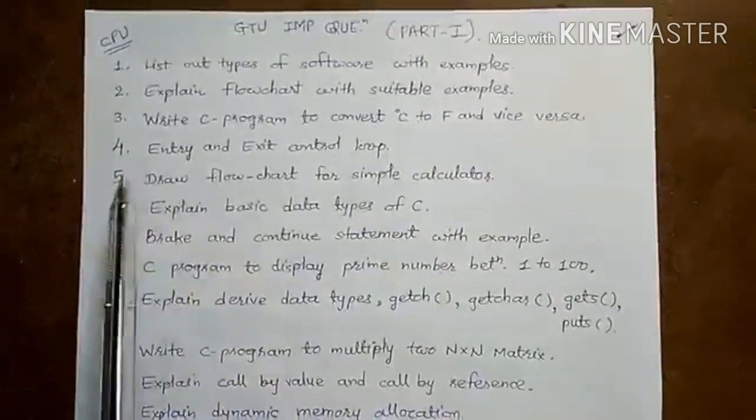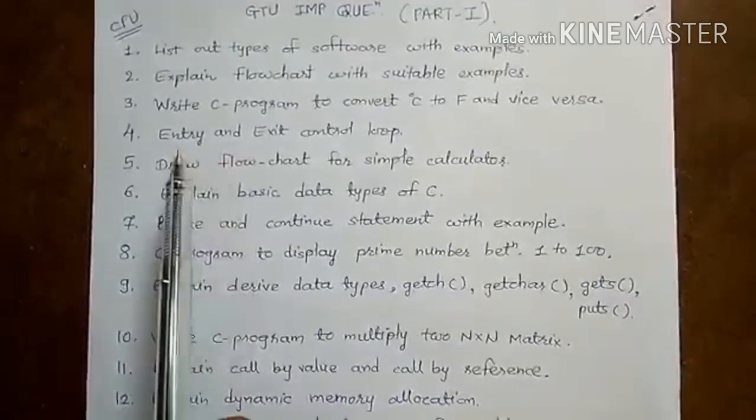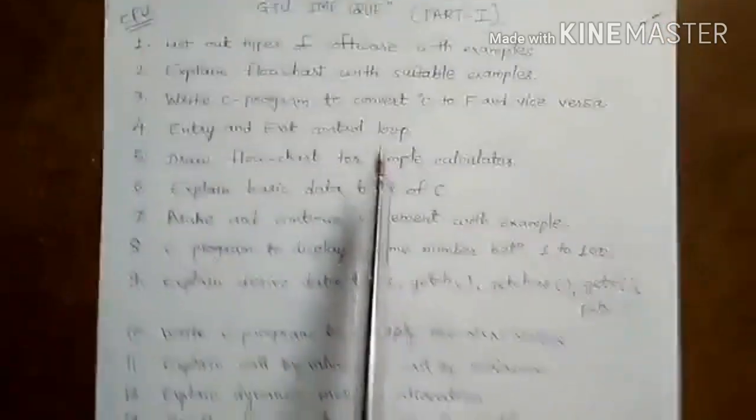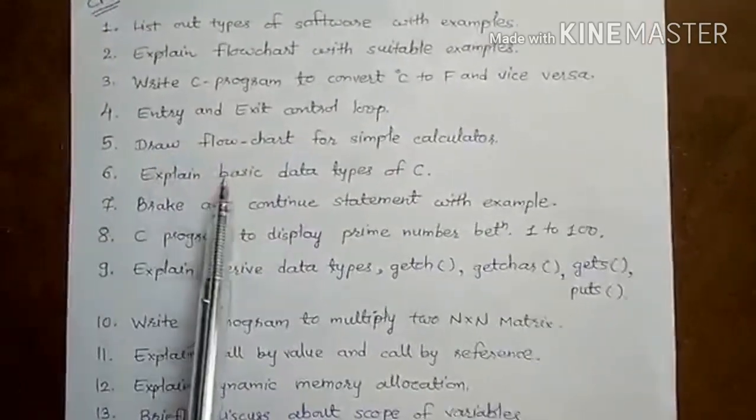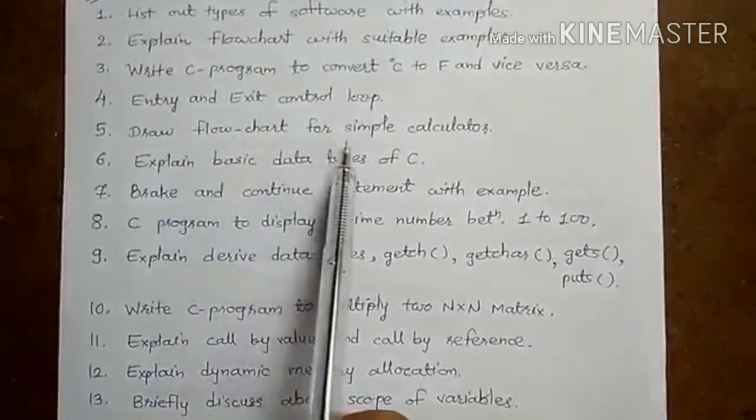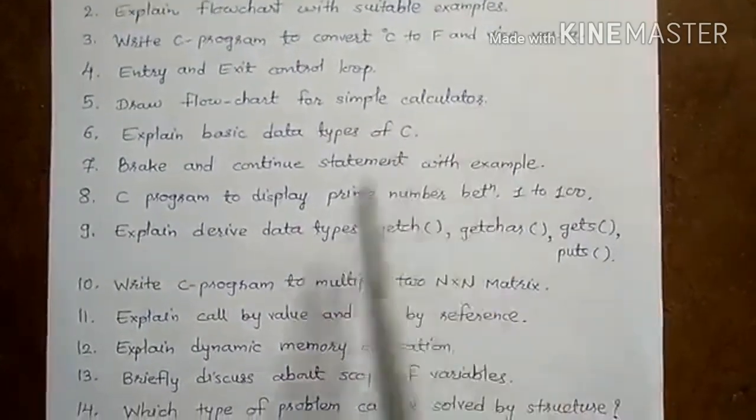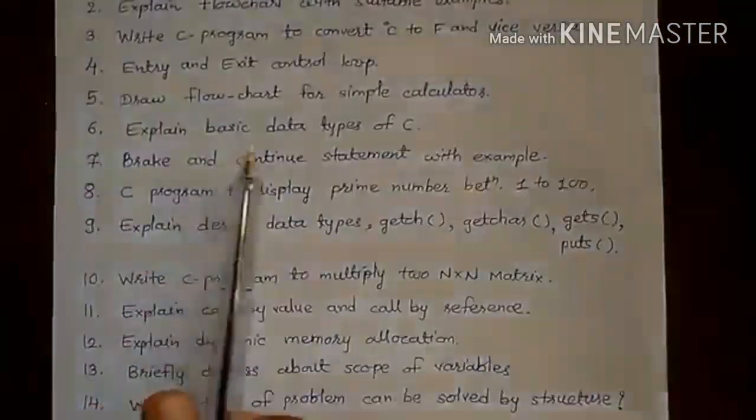Fourth, entry and exit control loop. Fifth, draw flowchart for simple calculator. Sixth, explain basic data types of C.